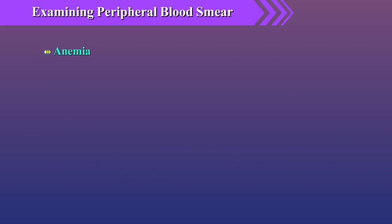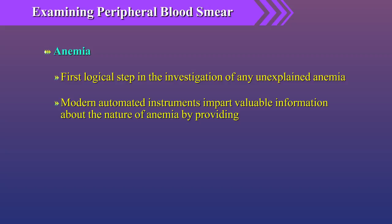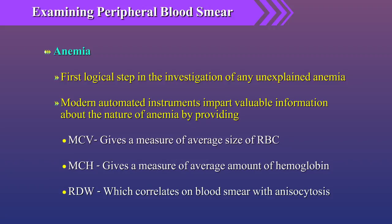We will first look at anemia. The consideration of the blood smear and the RBC indices is a logical first step in the investigation of any unexplained anemia. Modern automated instruments impart valuable information about the nature of anemia by providing MCV, which gives a measure of average size of RBC; MCH, giving a measure of average amount of hemoglobin; and RDW, which correlates on blood smear with anisocytosis.